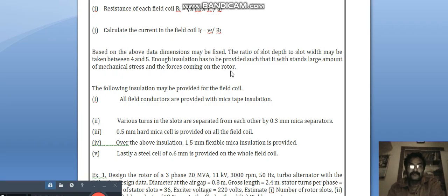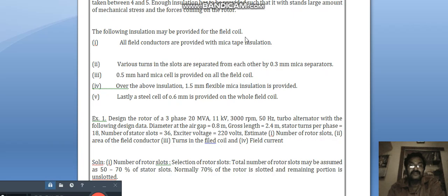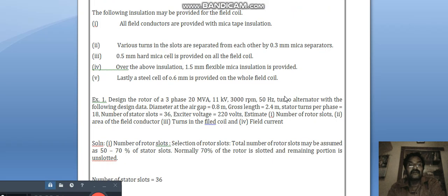Design of insulation has to be provided such that it withstands large amount of mechanical stress and force coming on the rotor. The following insulations may be provided for the field coils: All field conductors are provided with mica tape insulation. Various turns are separated by each other by 0.3 mm mica separators. 0.5 mm mica cell is provided on the field coils. Over the above insulation, 1.5 mm flexible mica insulation is provided. Lastly, steel cell of 0.6 mm is provided on the whole field coil.